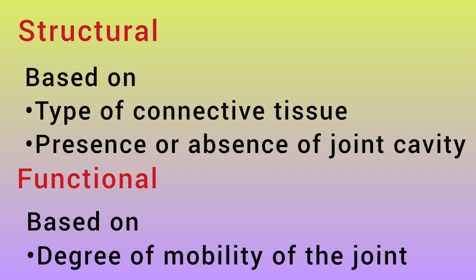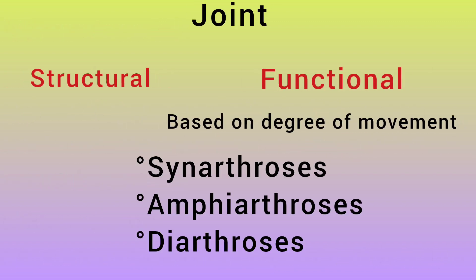The functional classification is based on the degree of movement. There are three types: Synarthrosis — no movement; Amphiarthrosis — slight movement; and Diarthrosis — freely movable. So functional joints are classified into these three types.